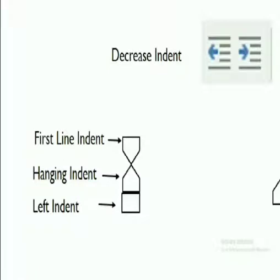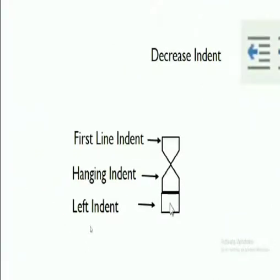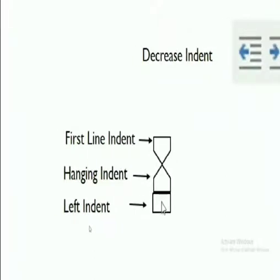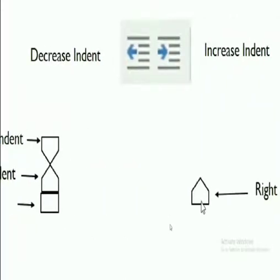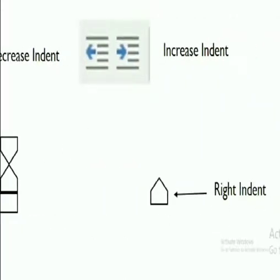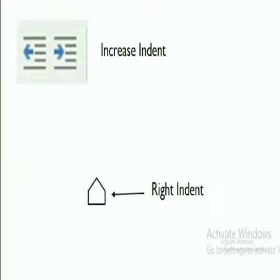The first line indent is used to change the indent of the first line of the paragraph only. Next is left indent, which helps us change the indent of the whole paragraph. Right indent is also found on the horizontal ruler bar and helps us indent from the right side.